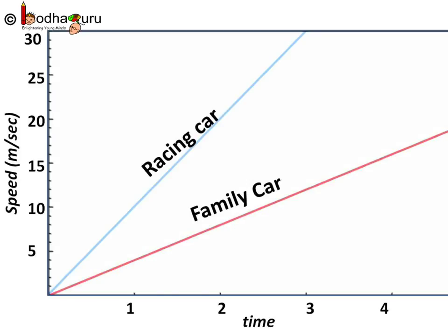There is a lot of difference in the rate of change of speed between the family car and the racing car, which is evident from the graph. The racing car crossed 100 kilometer per hour speed in 3 seconds, while the family car just crossed 43 kilometer per hour.